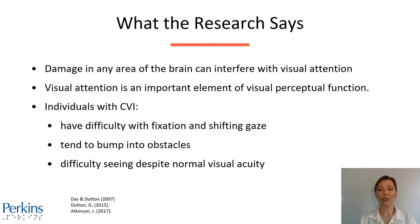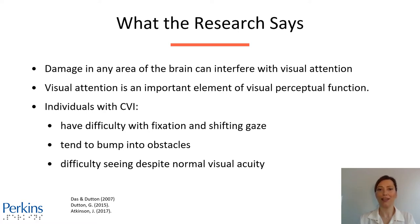What the research says: Damage in any area of the brain can interfere with visual attention. Visual attention is an important element of visual perceptual function. Individuals with CVI who have difficulty with visual attention behavior might have difficulty with fixation and shifting gaze between targets or people. They tend to bump into obstacles. They might have difficulty seeing despite having a normal visual acuity.